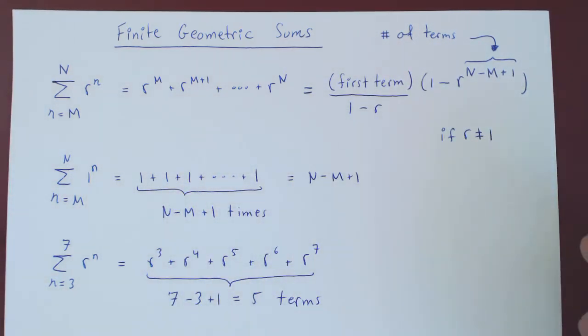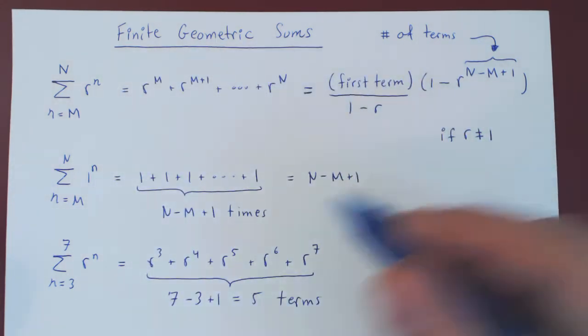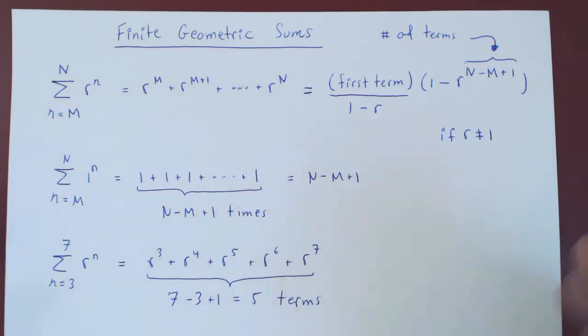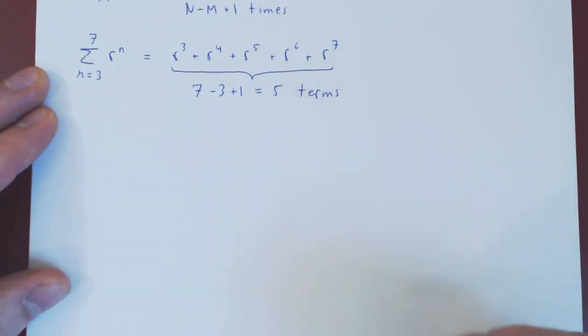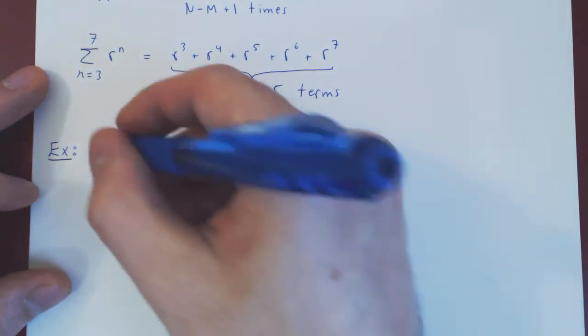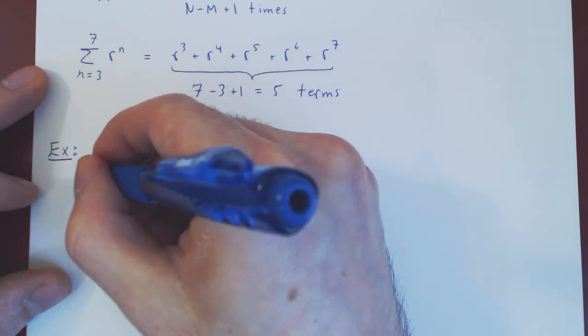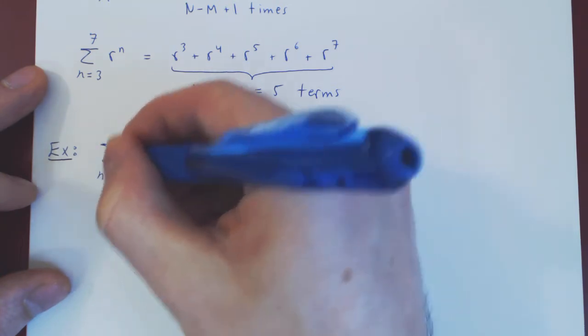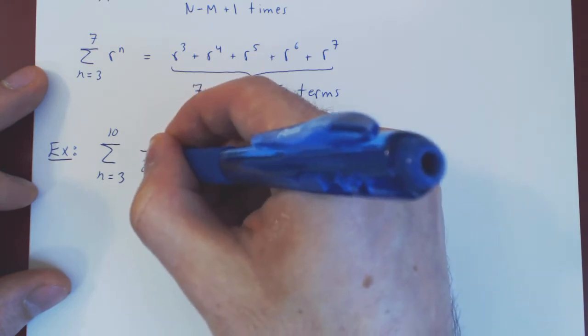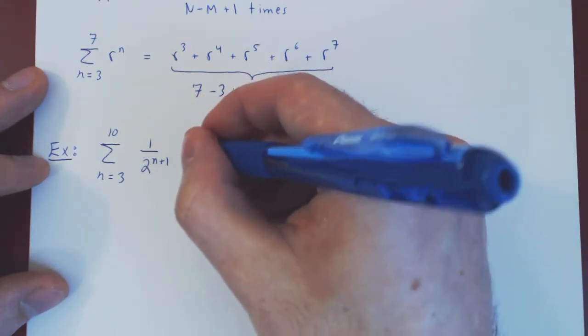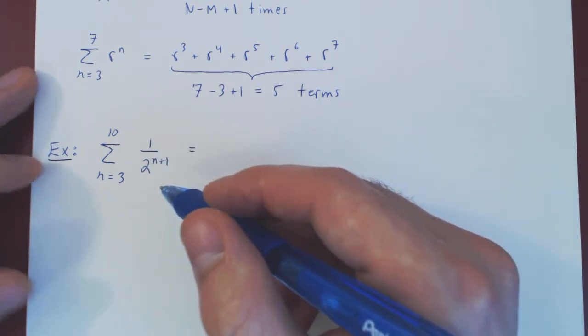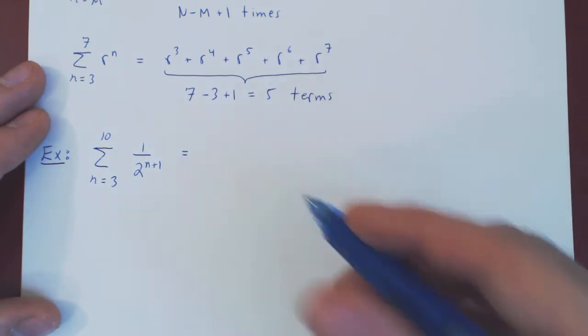Let's look at an example of this formula. Again, we won't bother with r equals 1, as the result is trivial. Suppose we are summing n beginning at 3 going up to 10, 1 over 2 to the n plus 1. So we are not summing exactly a fixed number to the n, but again with some algebra we can arrive at this form.